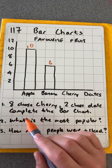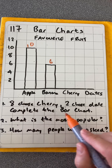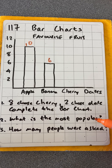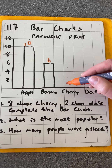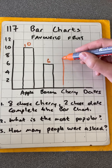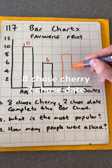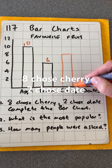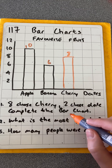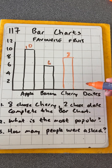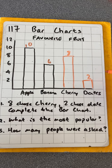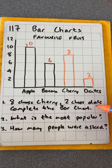Question 1 says 8 chose cherry and 2 chose date — we've got to complete the bar chart. So for cherry we're going to draw that bar up to 8, like that. And for dates we're going to only go up to 2. So that's question 1 done.